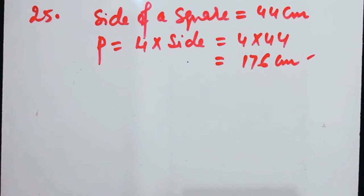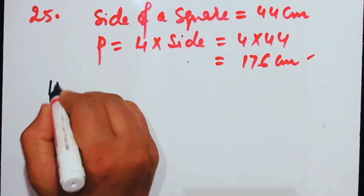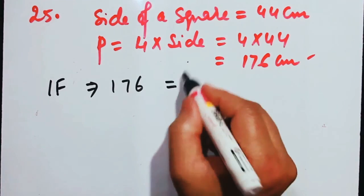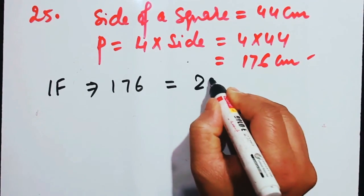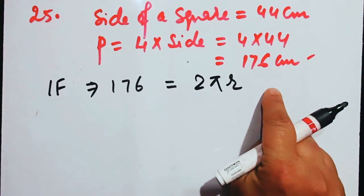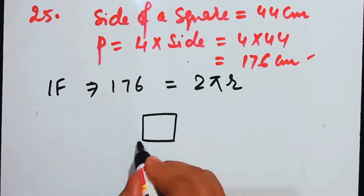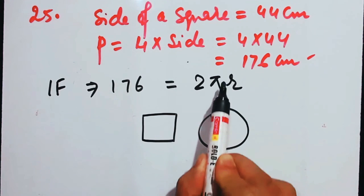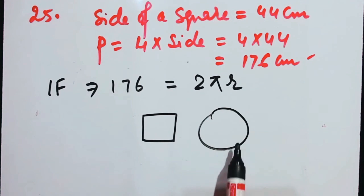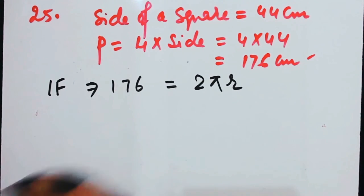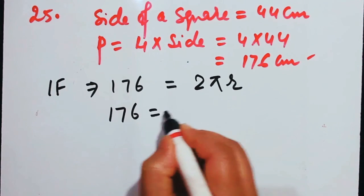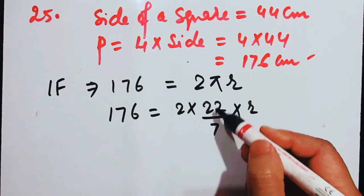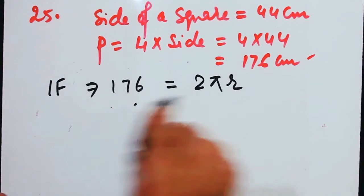If this perimeter is equal to the circumference of a circle — meaning if the sides of the square are reshaped into a circle — find the radius of the circle. So 176 equals 2πr, with π taken as 22/7. This gives 2 times 22/7 times r equals 176.